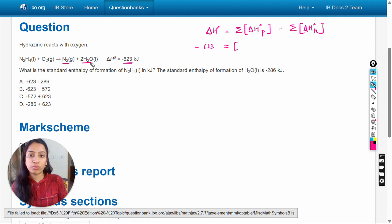Now we will write the standard enthalpy change for the products. In the products, nitrogen and water molecules are there. This nitrogen gas is an elementary substance, and we know that the standard enthalpy change for a pure element is equal to 0.